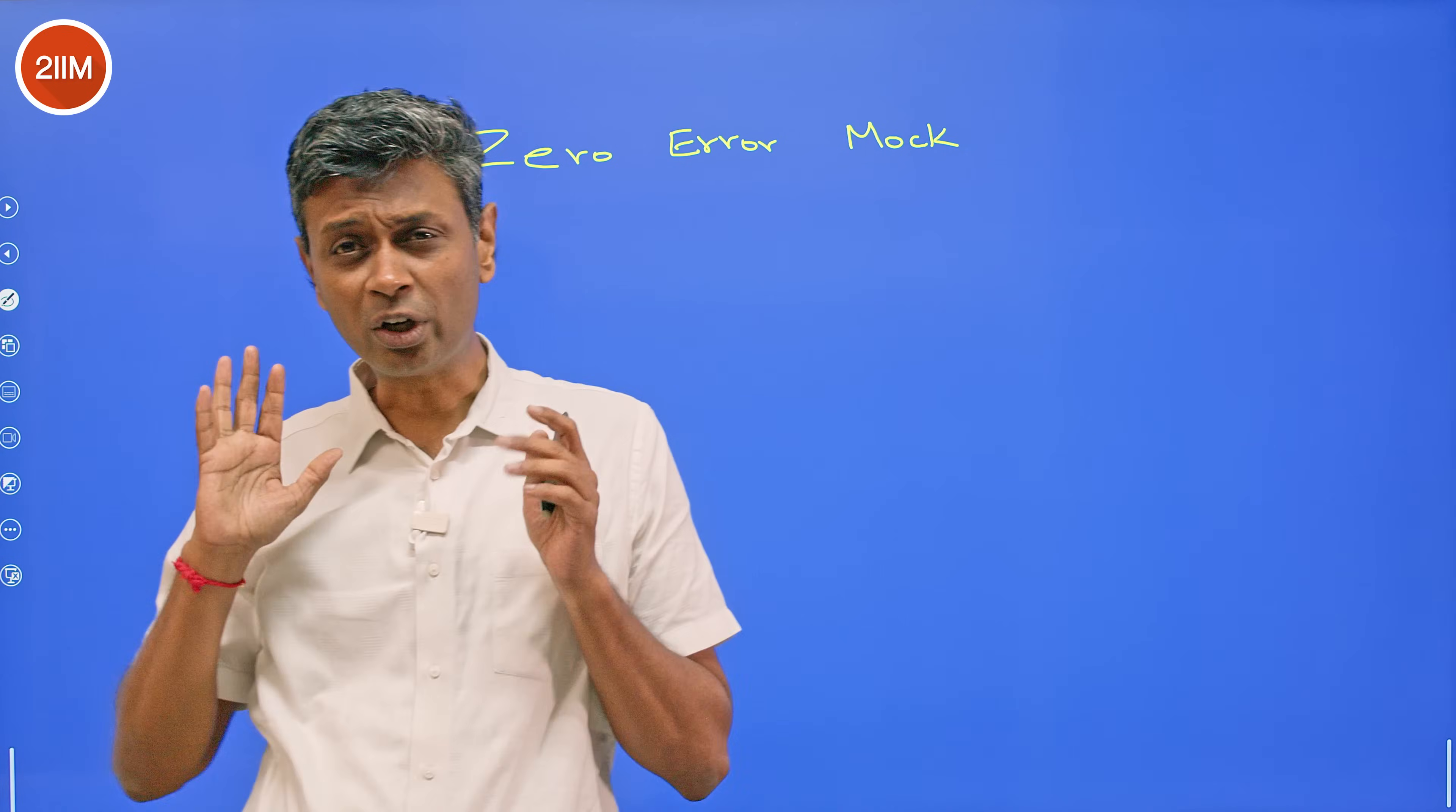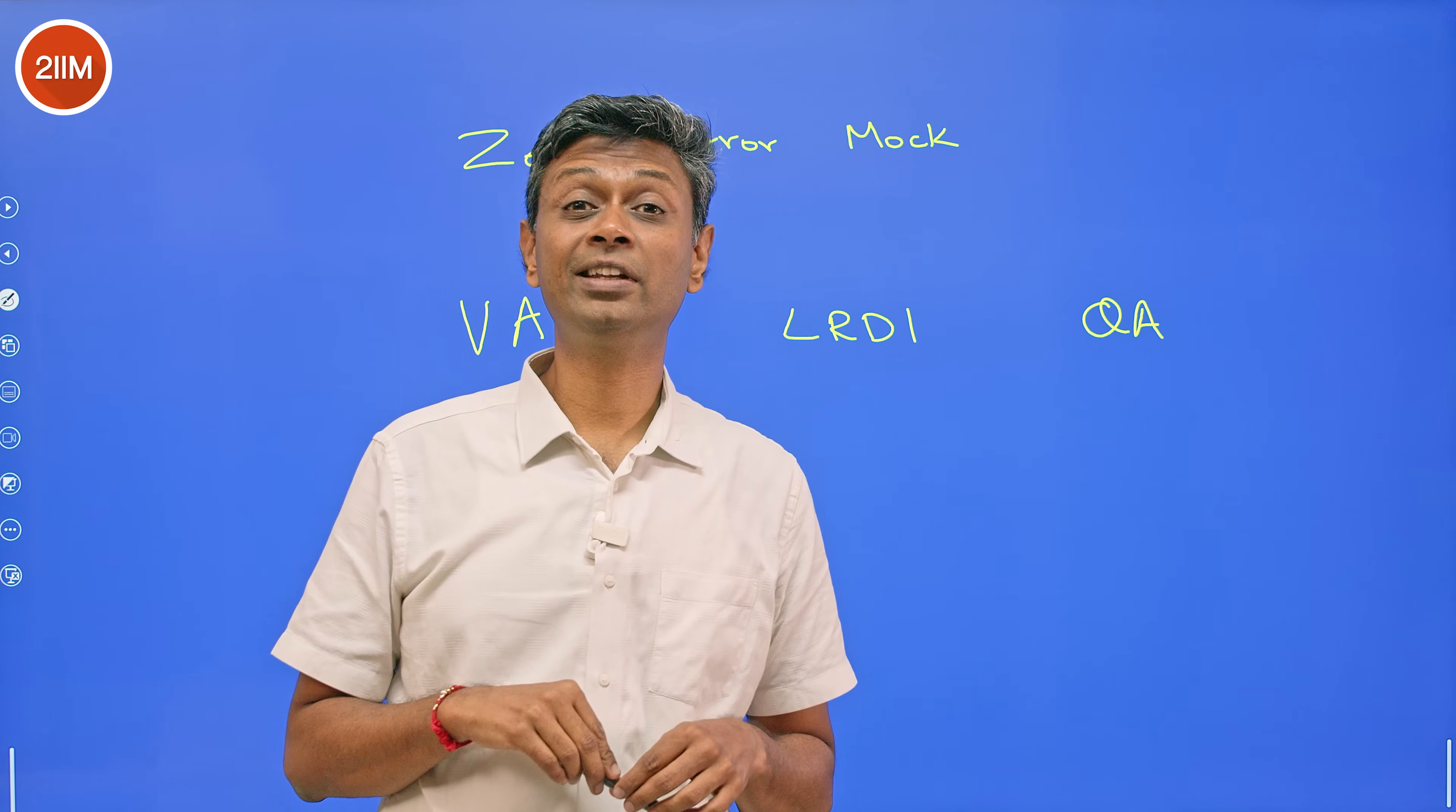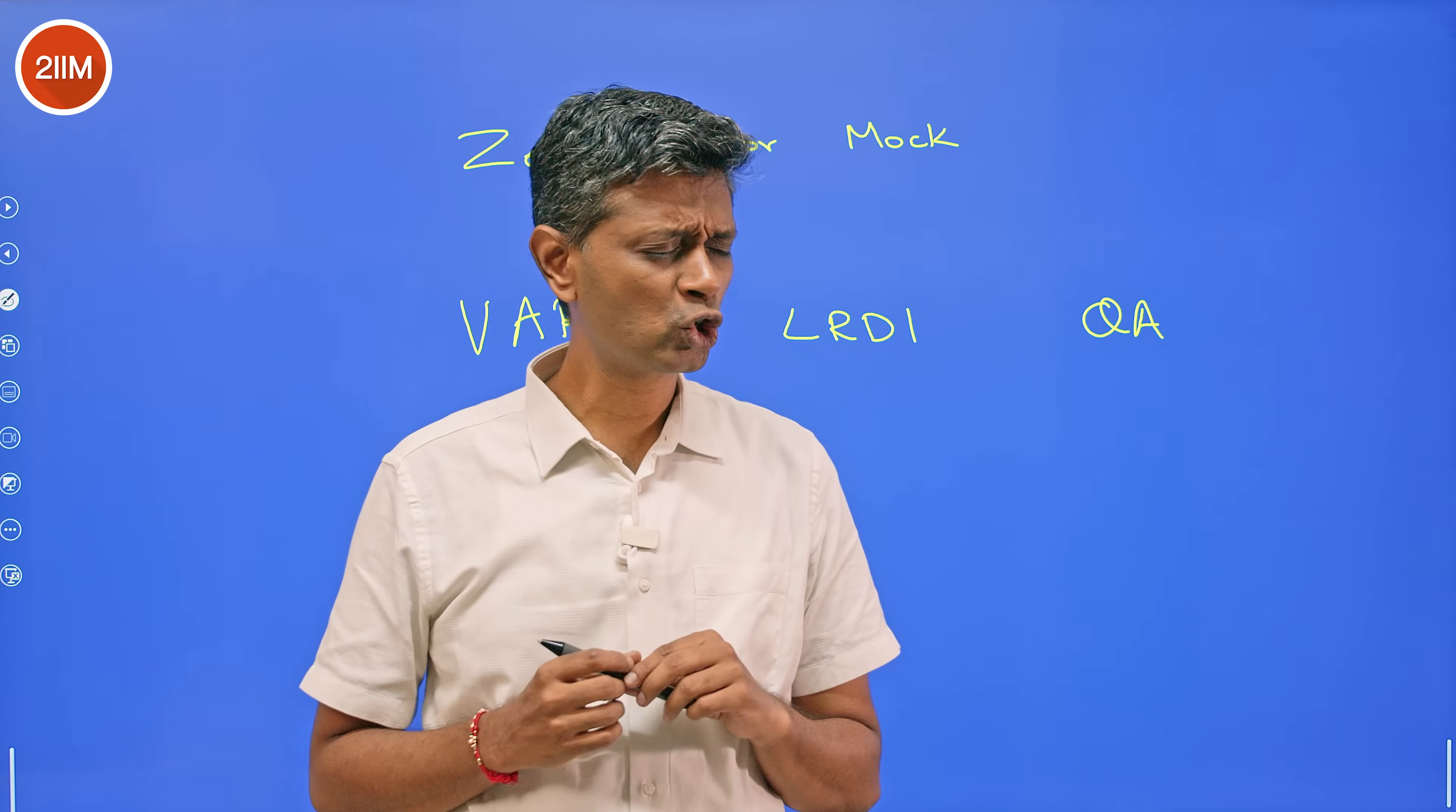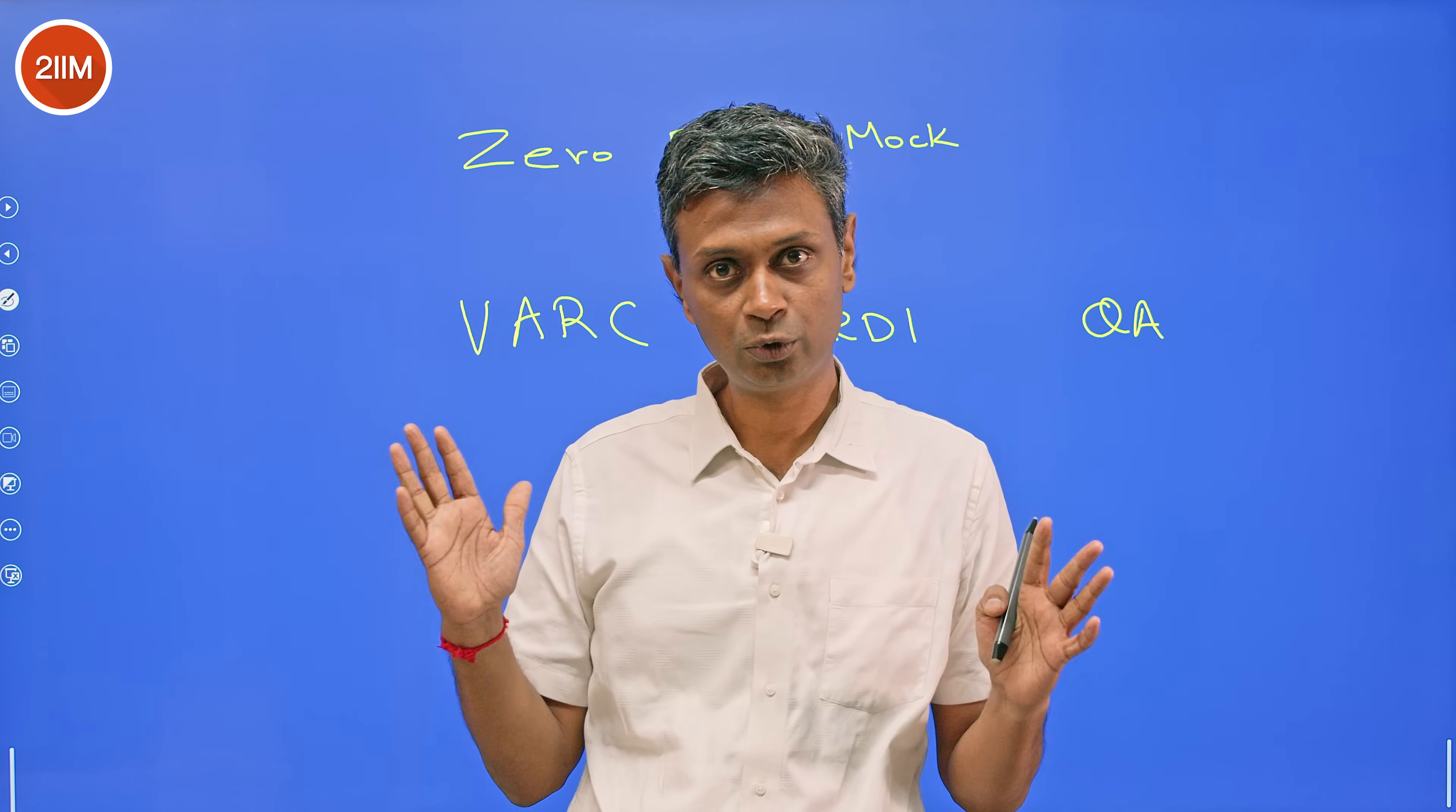I think every student should say I want to take a mock where they attempt LRDI, Quant, and VRC and have zero errors. I'd go to the extent of saying set that as your primary objective. Move out after you achieve this or nearly achieve this, because it's going to rewire the brain. Lots of students struggle to get 45 marks overall in this paper, not 45 marks in a section. 45 marks overall is a step too far for lots of people.